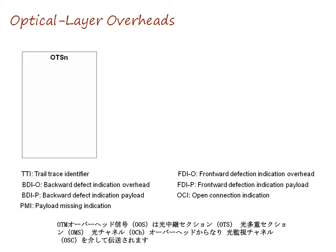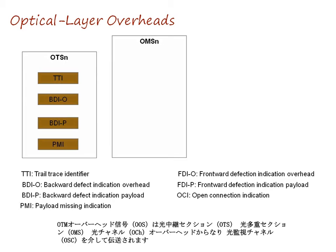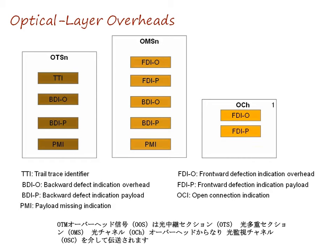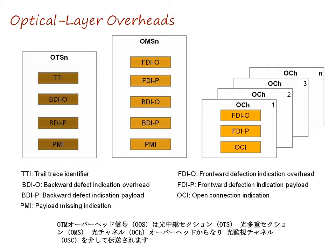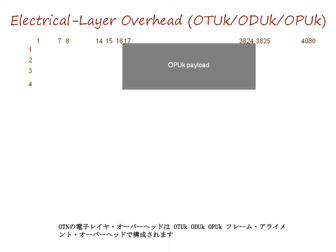Each OTM overhead signal consists of optical transmission section OTS, optical multiplexing section OMS, and optical channel OCH overheads, and is transmitted from an optical supervisory channel OSC. The electrical layer overheads of the OTM consist of OTUK, ODUK, OPUK, and frame-aligned overheads.